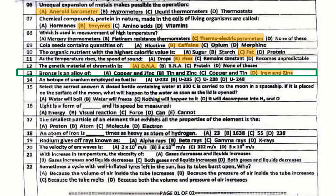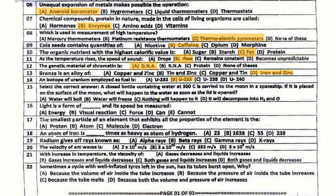Question number 14: An isotope of uranium employed as fuel — the correct answer is U-235.